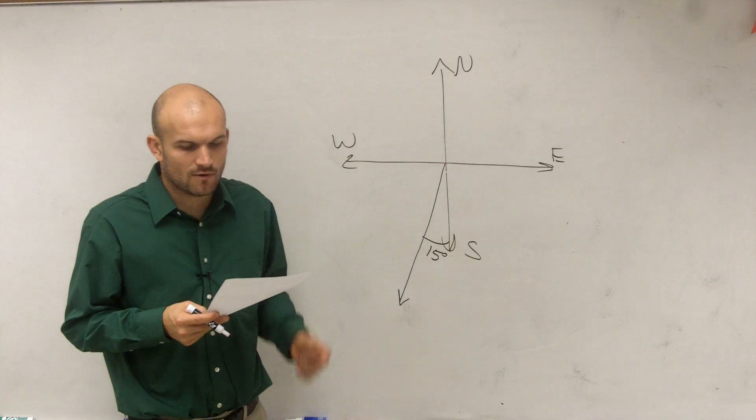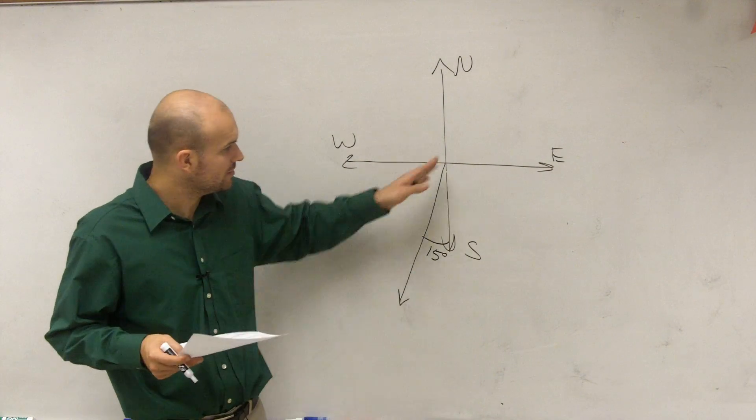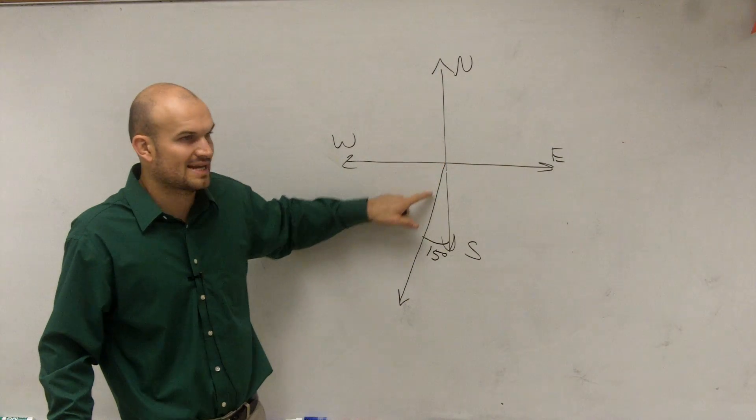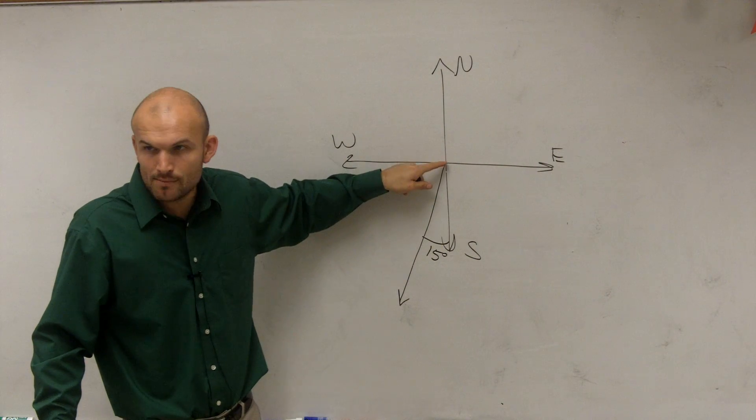It says after 2 hours how far has the plane traveled? So first of all, let's see this distance. If this plane is flying on this route, if it goes 1 mile, how far has it gone?